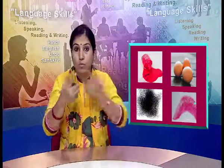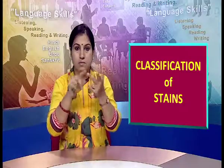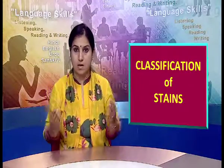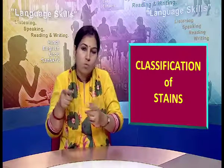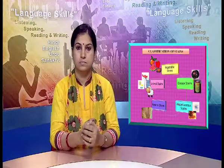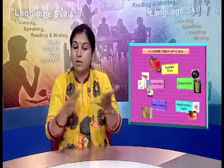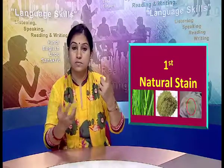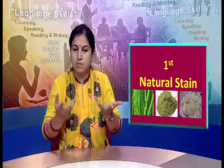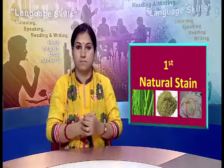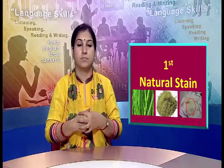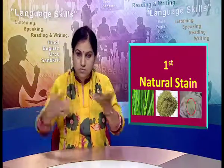Stains can be classified on the basis of their origin. The first category is vegetable stain. Vegetable stains are those stains whose origin is from vegetable or natural products like tea, coffee, fruit juice, and vegetable curry.